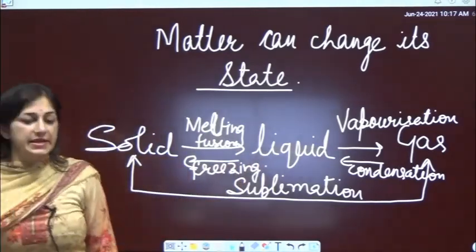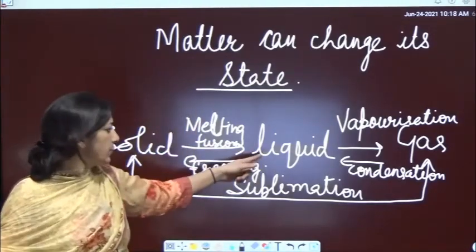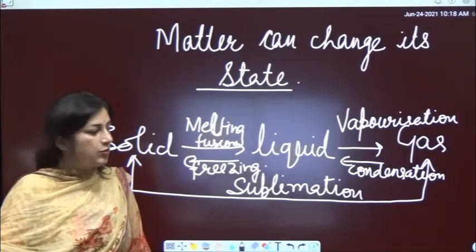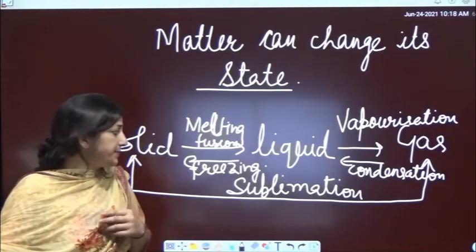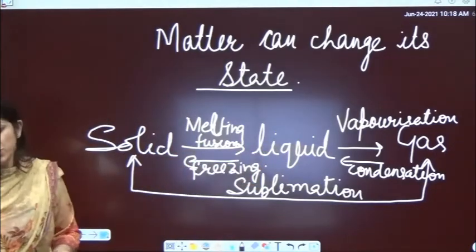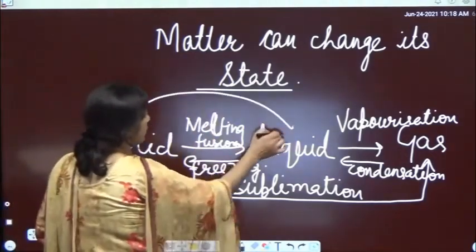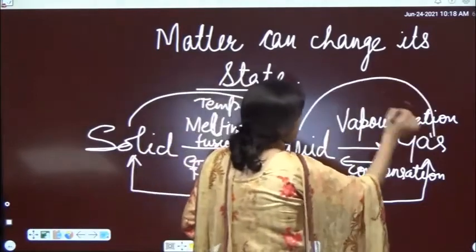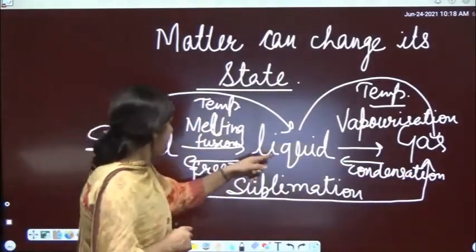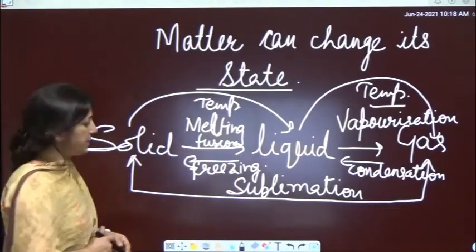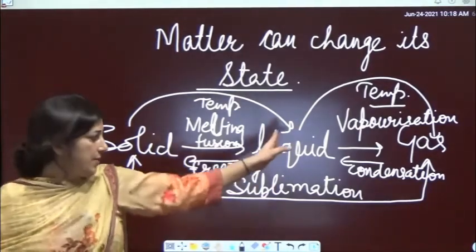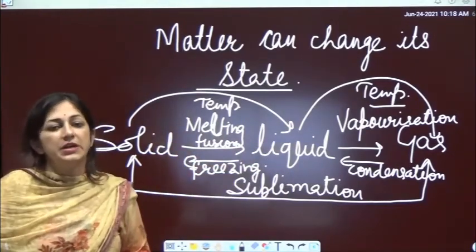Liquid to solid is freezing. So melting or fusion is solid to liquid, vaporization is liquid to gas, condensation is gas to liquid, and freezing is liquid to solid. When solid is converted into liquid, you require some increase in temperature. When liquid is converted into gas, you require further increase in temperature. When liquid is converted into solid, there is a decrease in temperature. Sublimation - solid to gaseous state - needs high temperature. But when gas is converted into solid, there must be a decrease in temperature.